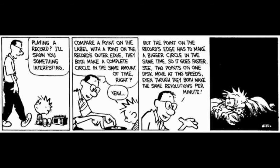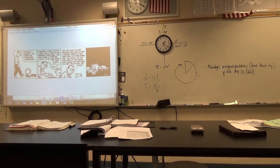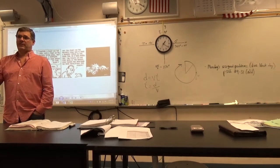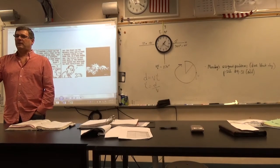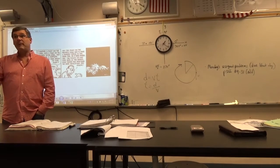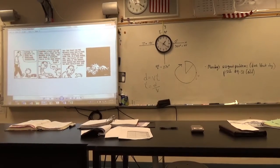But the point on the record's edge has to make a bigger circle in the same time, so it goes faster. Two points on one disc move at two different speeds even though they both make the same revolutions per minute. I love the artist's rendition of Calvin laying awake at night pondering this intricate physics question. Okay, let's head out to the quad for a demonstration.